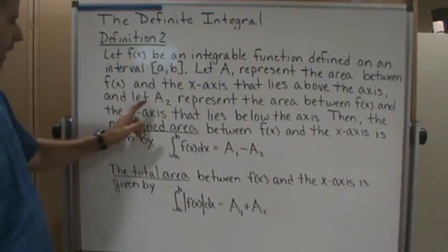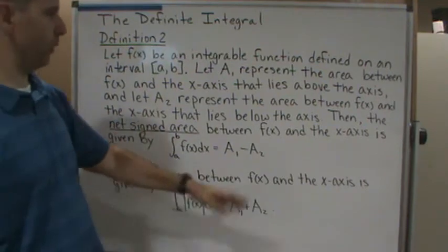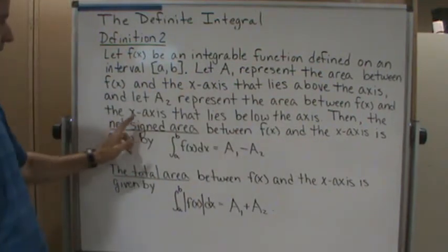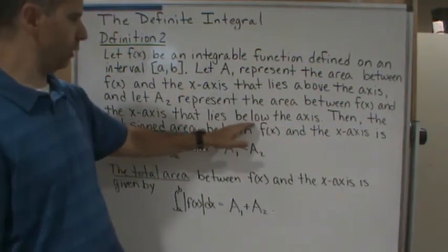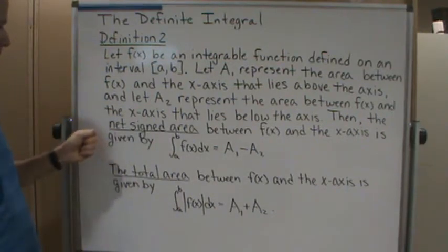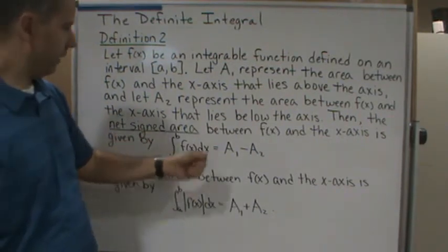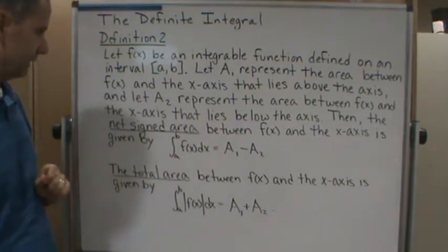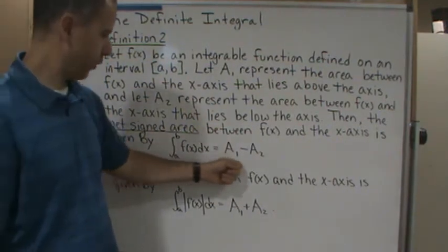And let a2 represent the area between the function f(x) and the x-axis that lies below the x-axis. Then the net signed area between f(x) and the x-axis is given by this formula here.